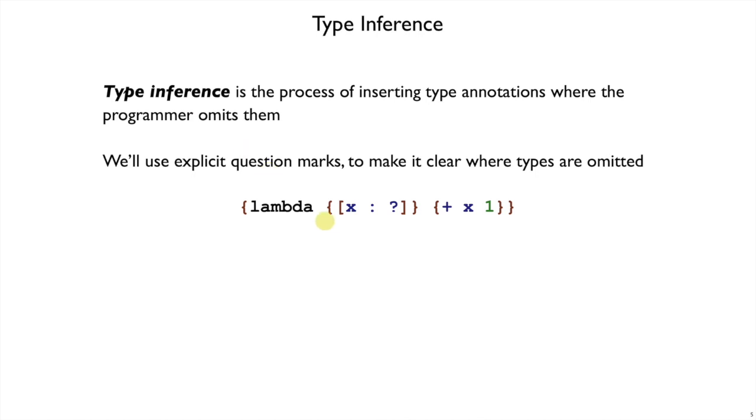To keep the grammar of typed curly simple, we're not going to let you just write x without a type, but instead write x colon always, but will allow a question mark to mean that the programmer didn't feel like writing a type there.